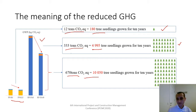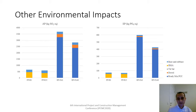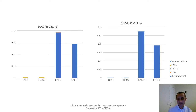You can see the other environmental impacts in these charts. Acidification potential and eutrophication potential results are similar to global warming potential, as are photochemical oxidant creation potential and ozone depletion.